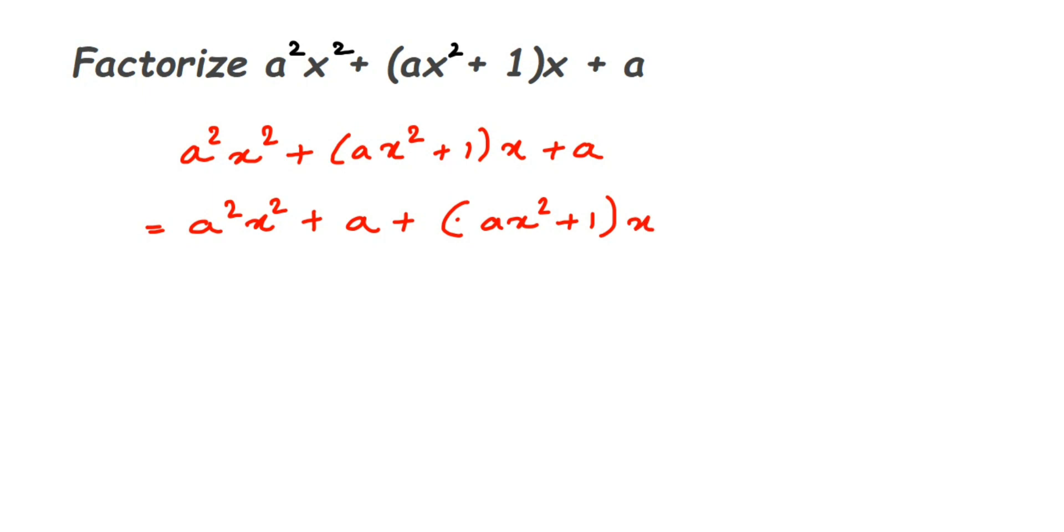Now if you see the first two terms, we have 'a' common. Here we have a², which is a×a - two a's are present. And here we have one a. So from these two, since one a is common, I'm gonna pull out one a as a common factor.